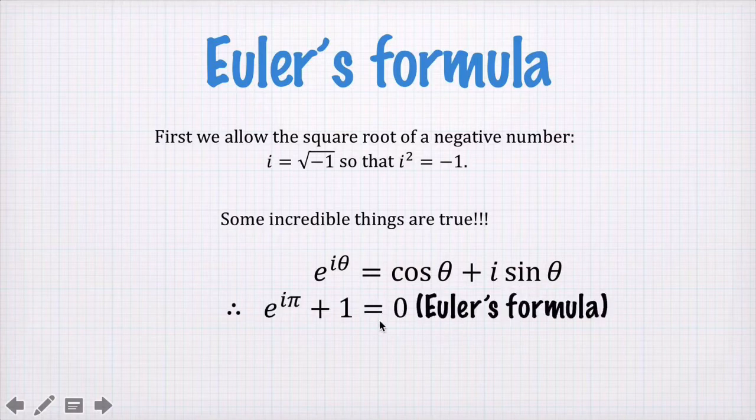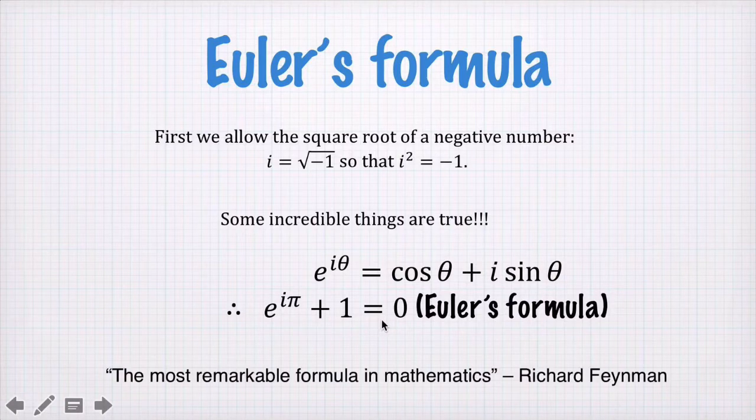Which leads to Euler's formula, e to the i pi plus one is equal to zero. And Richard Feynman once said that this is the most remarkable formula in mathematics.